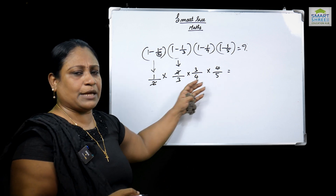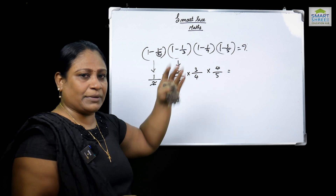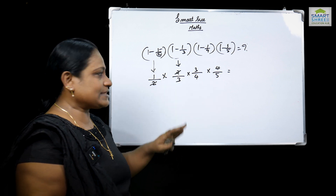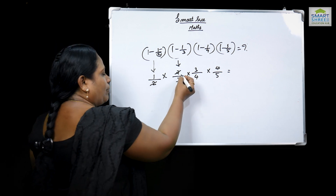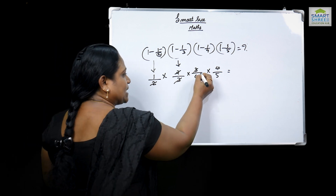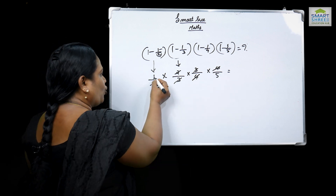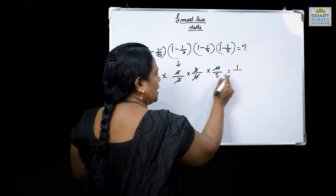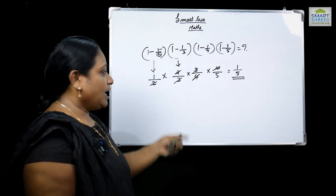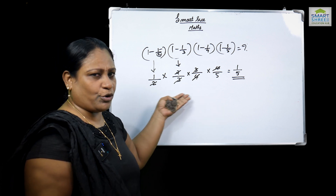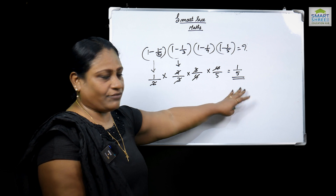If we multiply and there are common factors in numerators and denominators, we convert to the lowest term. We divide: the numerators and denominators cancel out, leaving the denominator as 5. So the answer is 1 by 5. This is done in one step.